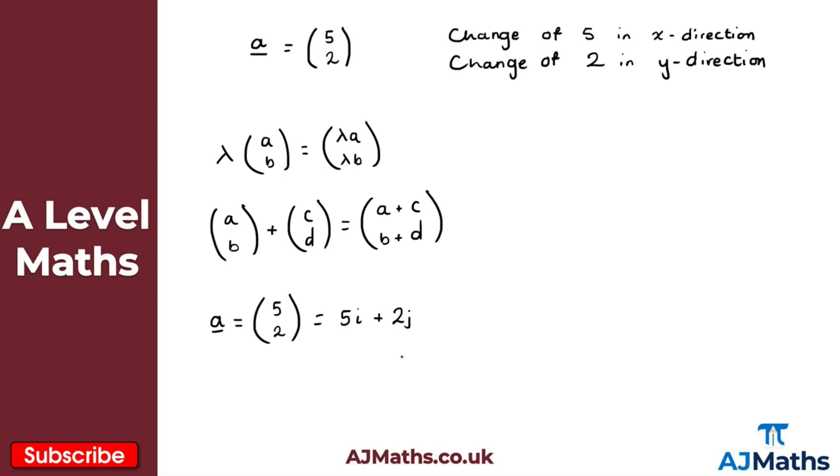So if you do A level further maths, you might have come across I when we look at complex numbers. Not the same thing here. So don't get confused with that. Again, this is just the same idea. This represents a change of positive 5 in the x direction and then a change of positive 2 in the y direction.